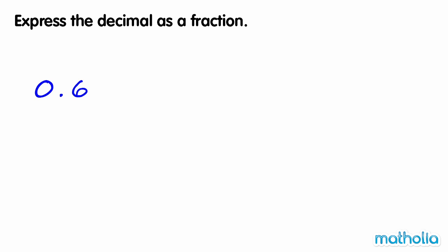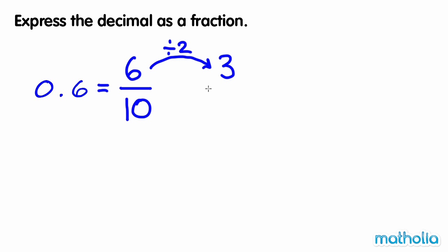Express the decimal as a fraction. 0.6 is equal to six tenths. We can write six tenths as a fraction with a numerator of six and a denominator of ten. We should give the fraction in its simplest form, so we need to find an equivalent fraction with the smallest possible numerator and denominator. We can divide the numerator and the denominator by two to give three fifths. This is the simplest form, so 0.6 is equal to three fifths.